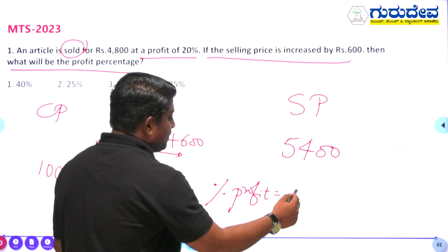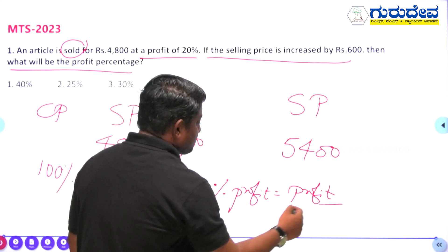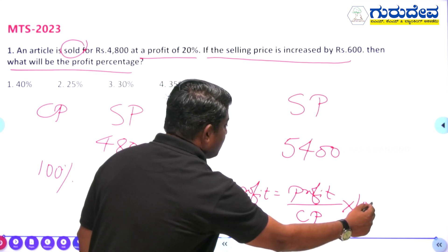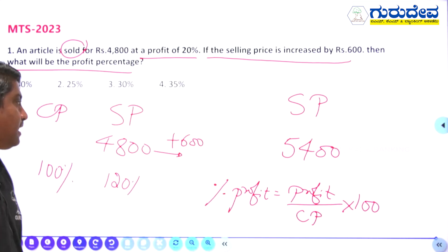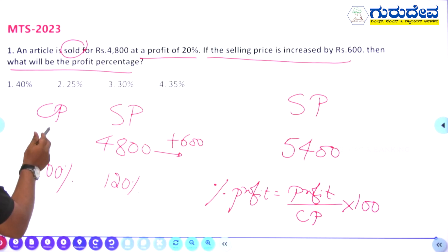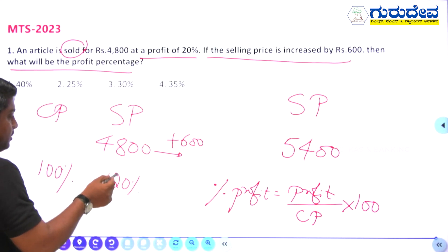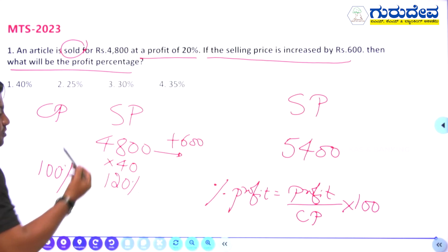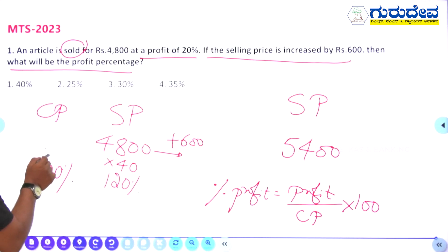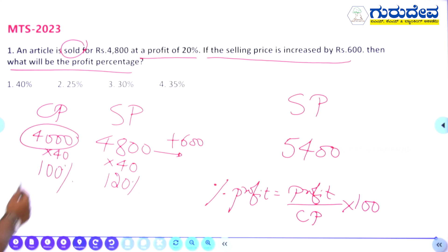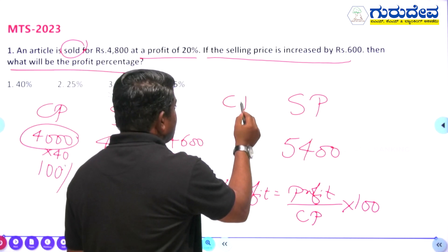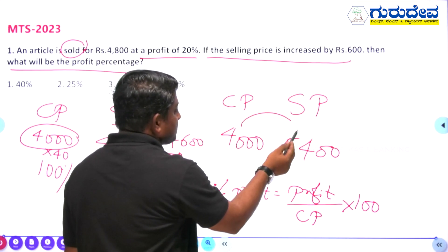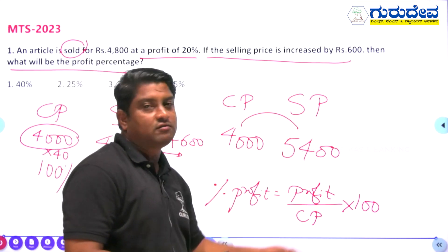We don't know the cost price directly. Always remember: profit percentage equals profit divided by cost price, into 100. Using the original selling price of ₹4800 at 120 percent, we calculate: 120 × 40 = 4800, and 100 × 40 = 4000. So the cost price is ₹4000.